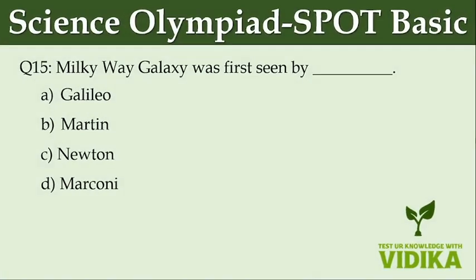The Milky Way galaxy was first seen by dash. Option A: Galileo. Option B: Martin. Option C: Newton. Option D: Markane.